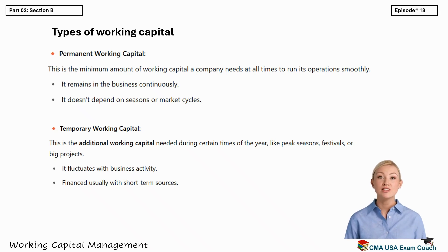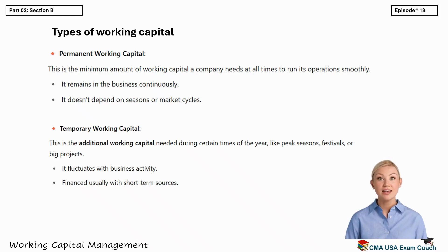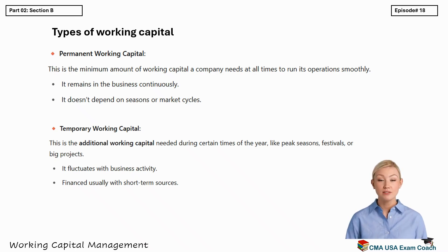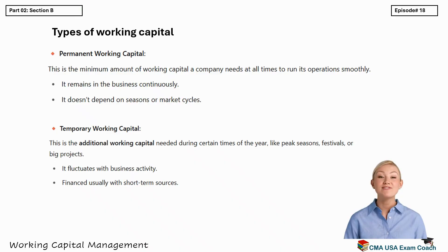To give you a clearer picture, imagine a company that sells air conditioners. During the summer, it needs more inventory and more cash for marketing and operations — that extra working capital is temporary. But the regular inventory and fixed cash needs for running the office — that's permanent. So to sum up, companies need to choose the right policy based on their risk appetite and business nature: a conservative approach offers safety, an aggressive one pushes for profitability, and a moderate policy tries to strike the right balance. They must also manage both permanent and temporary working capital wisely.